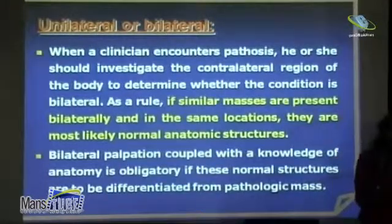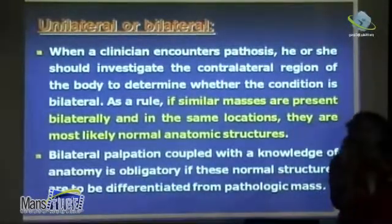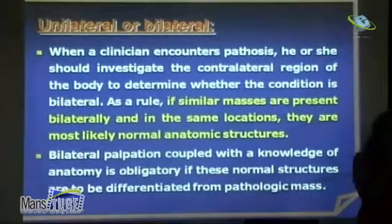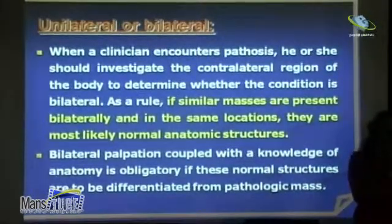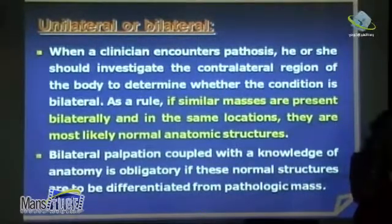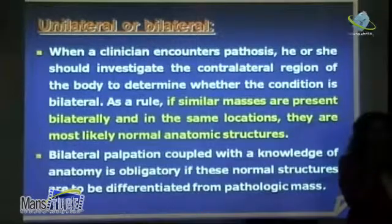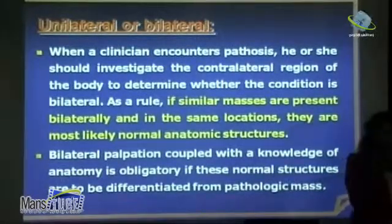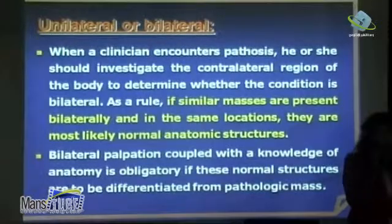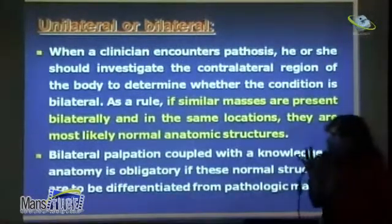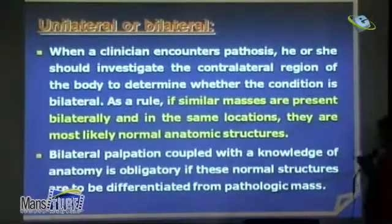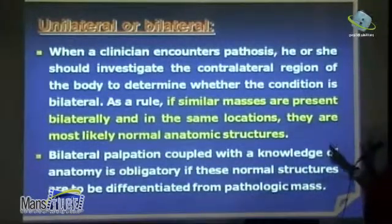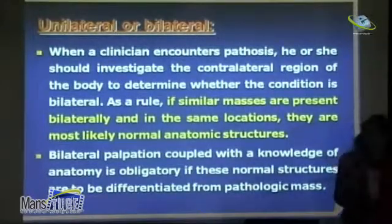Unilateral or bilateral — when you have a lesion, you have to examine the patient on both sides. You have to see the symmetry, if it is symmetric or asymmetric. If you have a lesion on the left side, examine the right side to see if they are the same or not. If they are the same, sometimes it is just anatomy. A lesioner who encounters a pathosis should investigate the contralateral region of the body to determine whether the condition is bilateral. If similar masses are present bilaterally in the same location, they are most likely normal anatomic structures.